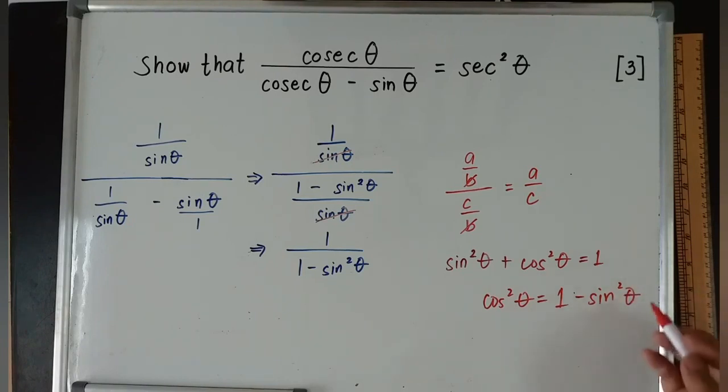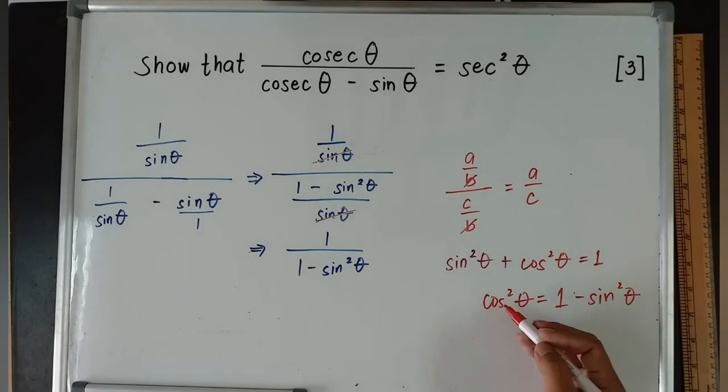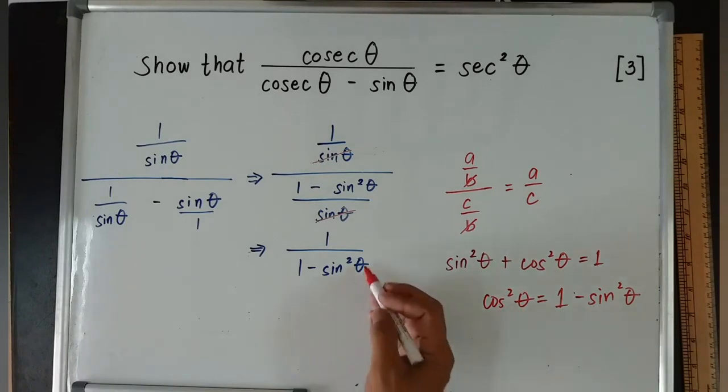Sin² θ + cos² θ = 1, so cos² θ is equivalent to 1 - sin² θ. So this 1 - sin² θ is equivalent to cos² θ. We can replace this with cos² θ.